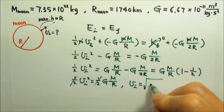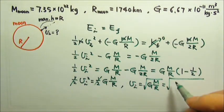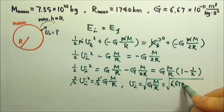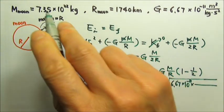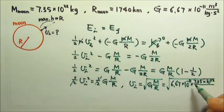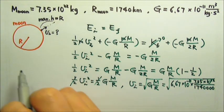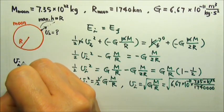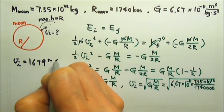Now I can plug in all the numbers. The big G is 6.67 times 10 to the negative 11. The mass of the moon is 7.35 times 10 to the 22nd. And then the radius is 1740 kilometers. So I have to add three zeros. If I do this calculation, I should get the initial speed to be 1679 meters per second.